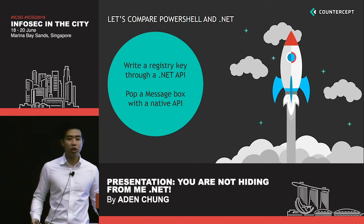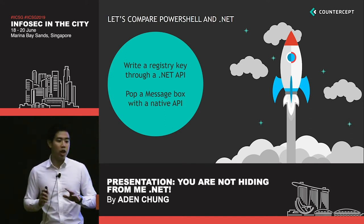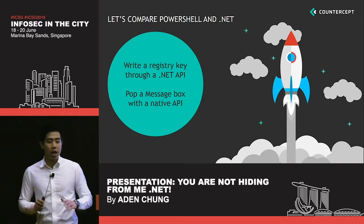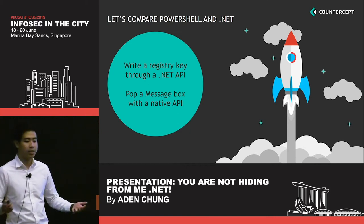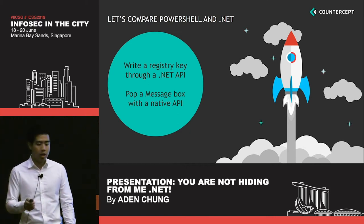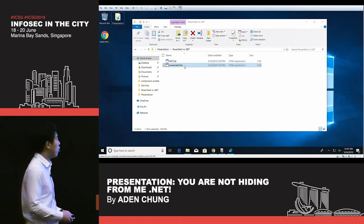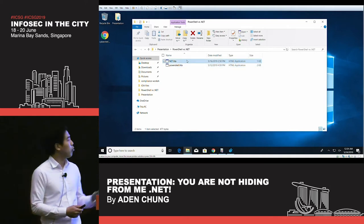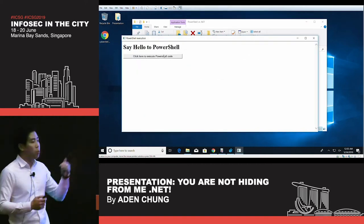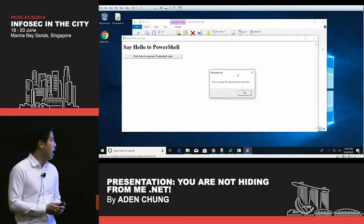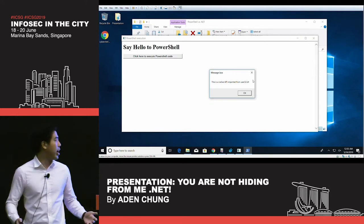Both will write a registry key through the use of the .NET API, and both will pop a message box through the use of a Windows native API — which is essentially how the Windows OS communicates. In the demo, I have a PowerShell script file and a .NET script file. I click on my PowerShell script first, execute the PowerShell code, pop a message box, and write a registry key. Now we'll look at what indicators were left by this example.